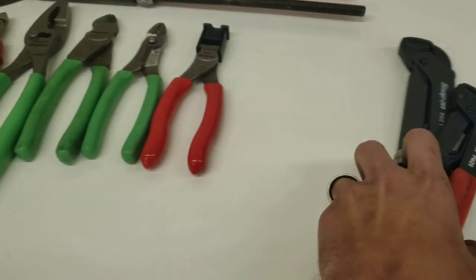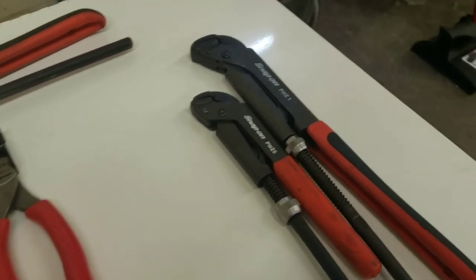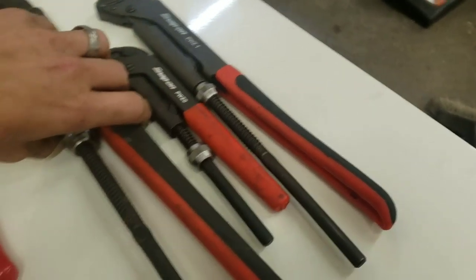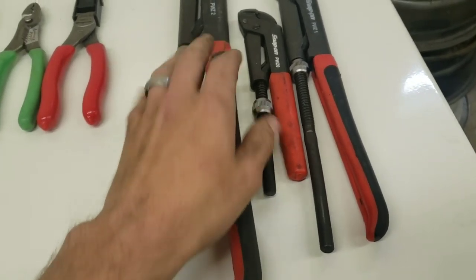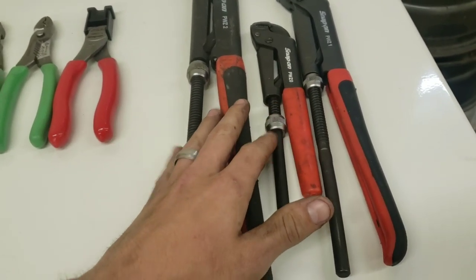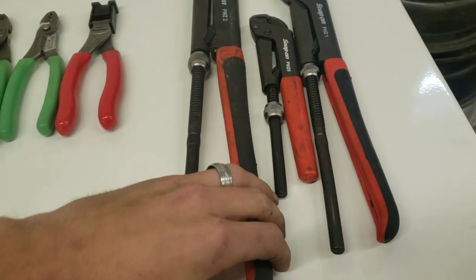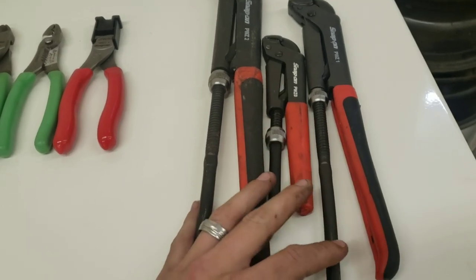Yes, you can get the Bahco ones - the same people make them for Snap-on - but the only difference is Snap-on has this rubber plastic handle, while the Bahco ones are painted. That's the main difference between them.